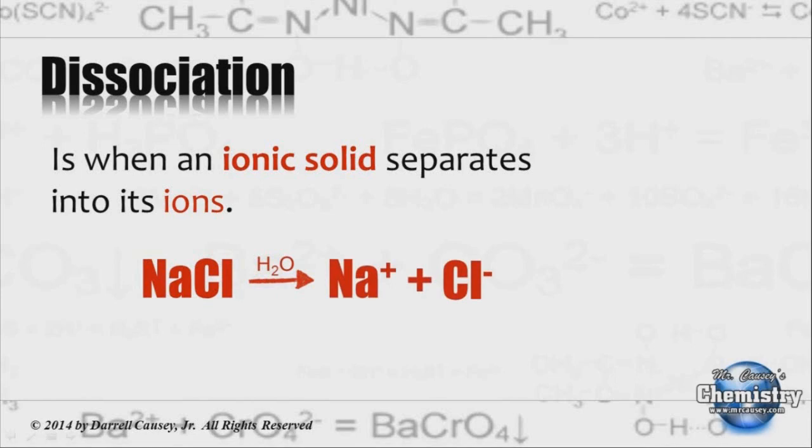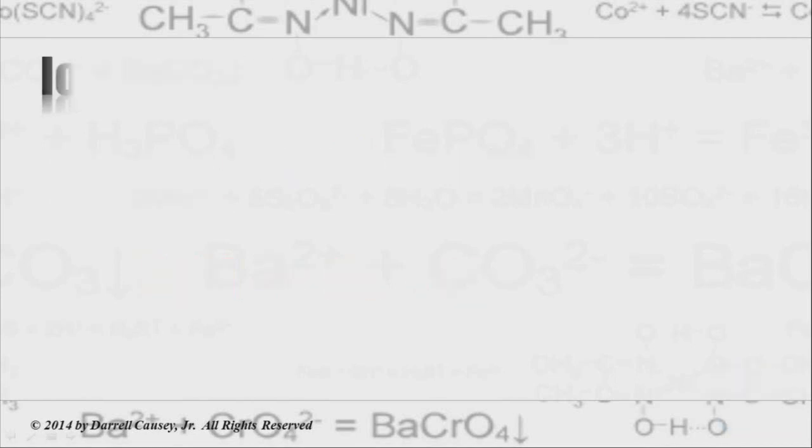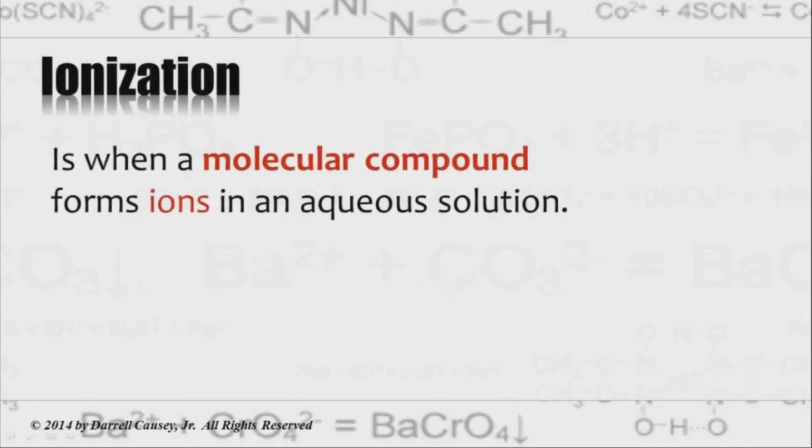However, ionization is when a molecular compound—remember molecular means covalent—forms ions in aqueous solution. So when a molecular compound forms ions in aqueous solution, like hydrogen chloride when it's put in water, we get hydrogen ions and chlorine ions. That's ionization.